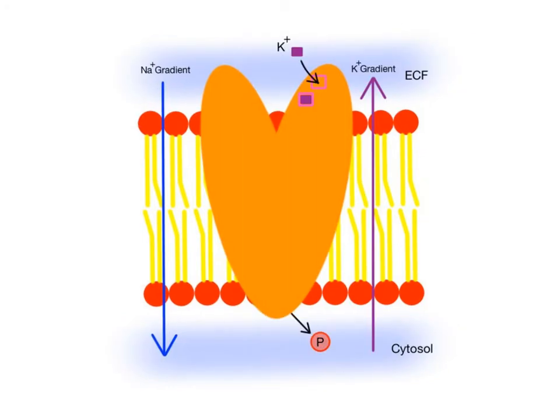In step three, as the protein changes shape, it allows two incoming potassium ions to attach to a binding site on the ECF side of the protein, which releases the phosphate group.